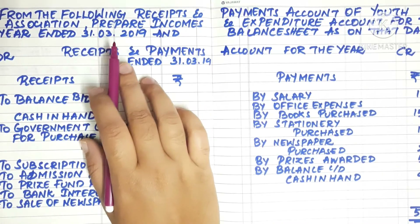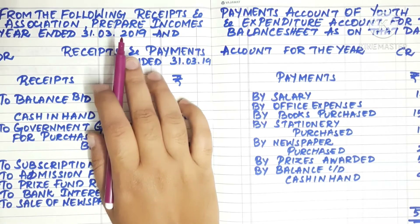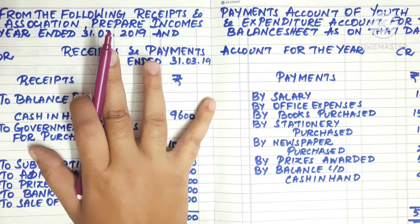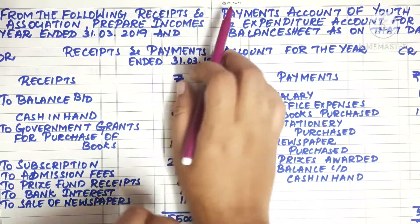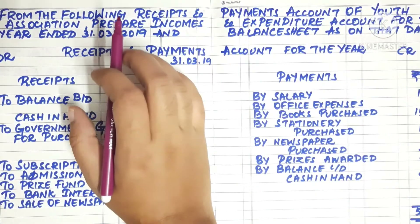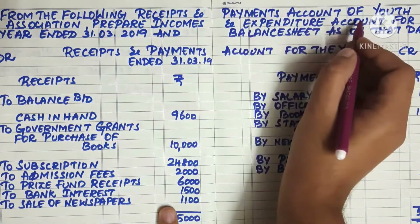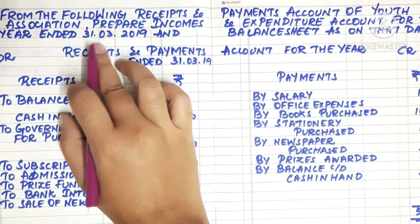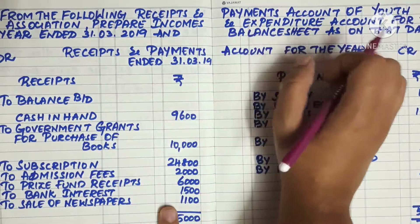Now we will see some of the sums. This is one of the questions we will ask. From the following receipts and payment account of a youth association, prepare the income and expenditure account for the year ended 31-3-2019 and the balance sheet as on that date.